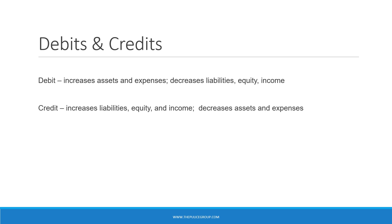A debit increases assets, expenses, and owner distributions. Credits will decrease these same accounts. A credit increases liabilities, income, and owner contributions, while debits will decrease these accounts.